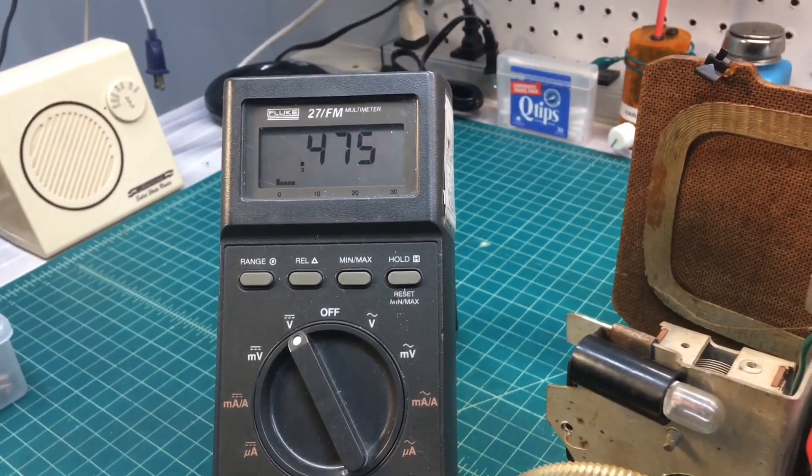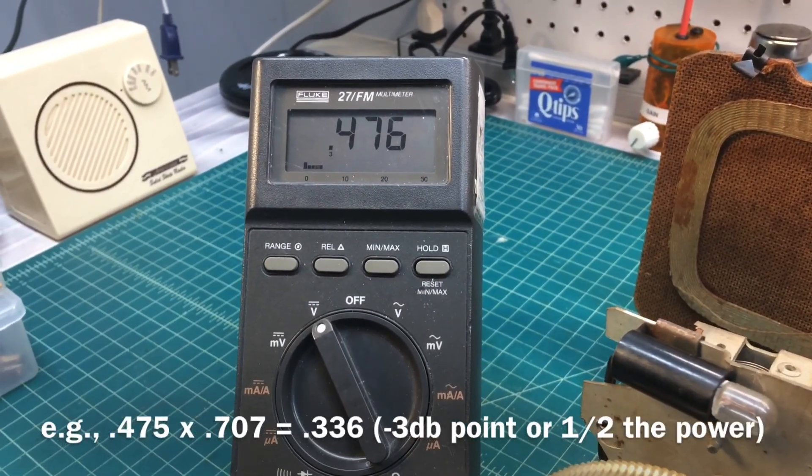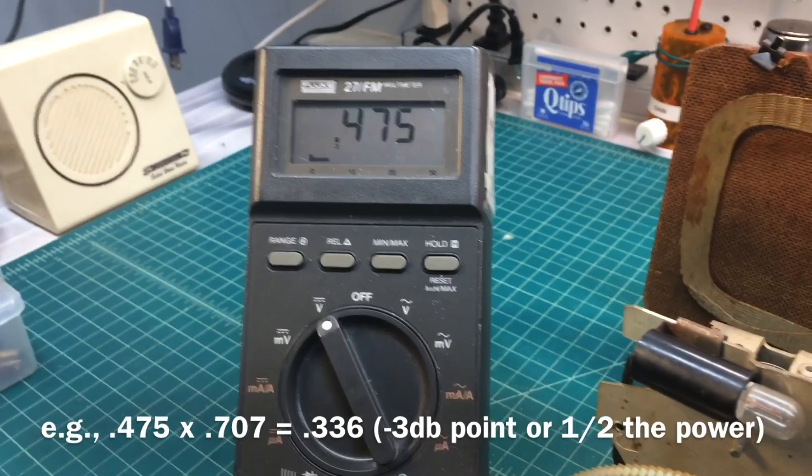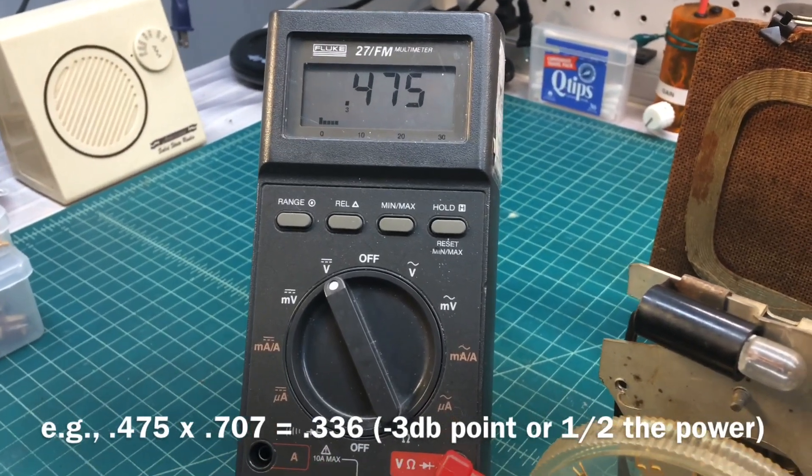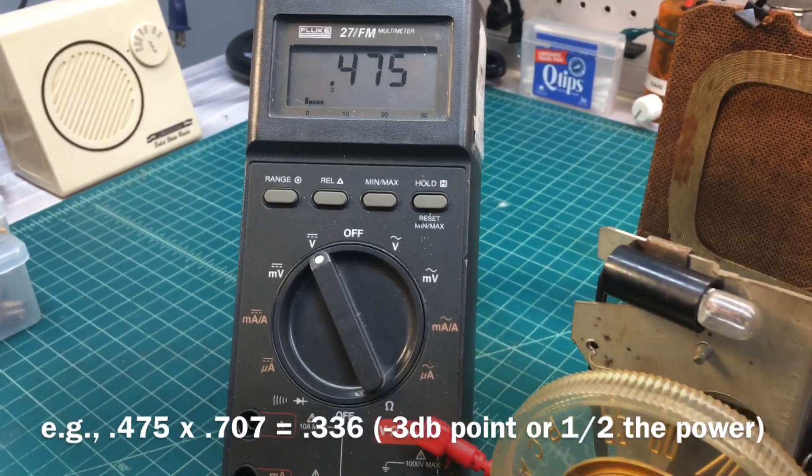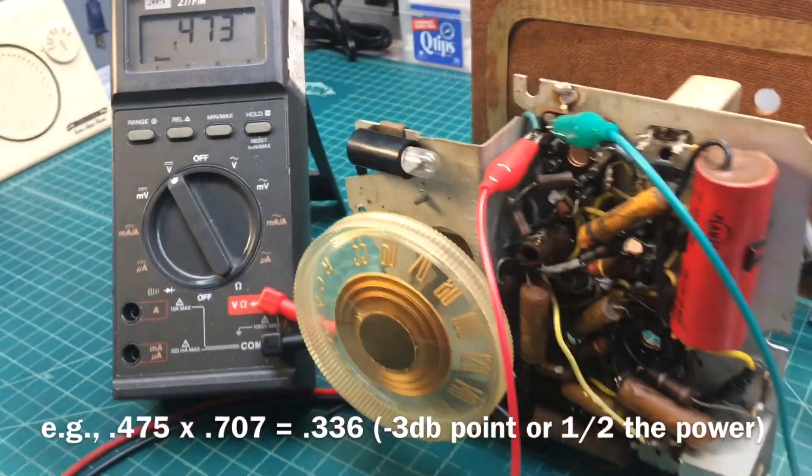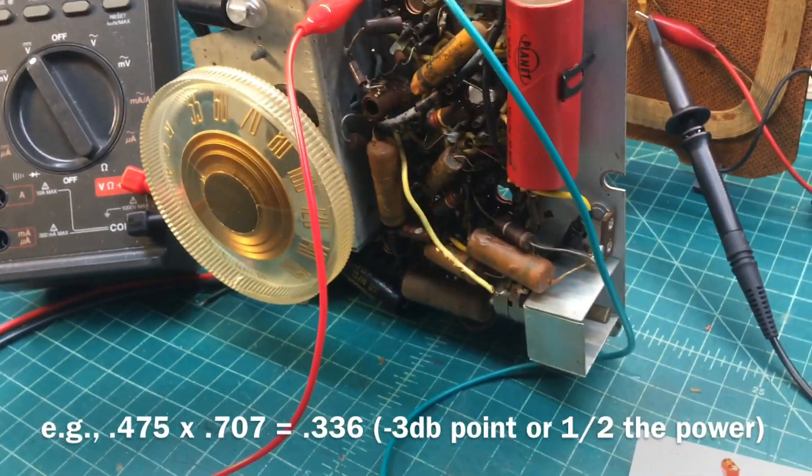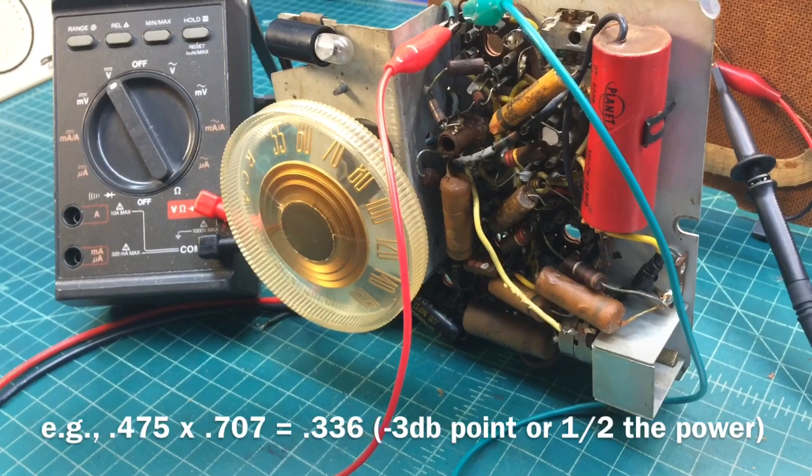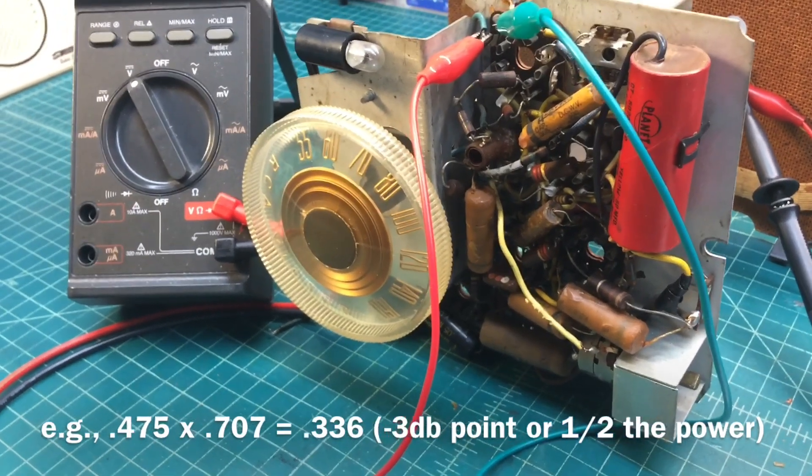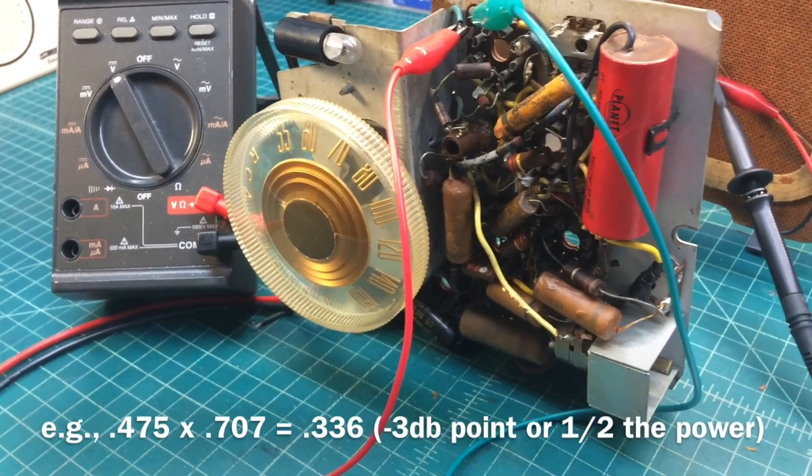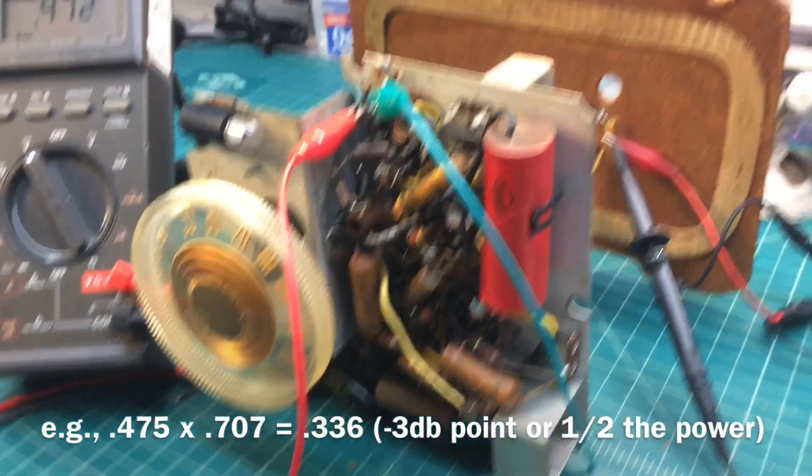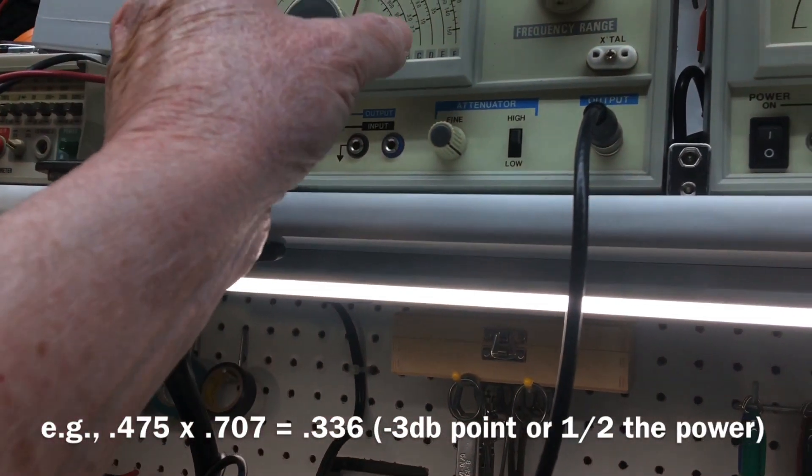So what I'll do is just take the peak of the level reading that you see here, multiply that times 0.707. That will be the minus 3 dB point, which is the reduced power of one half of either sideband.